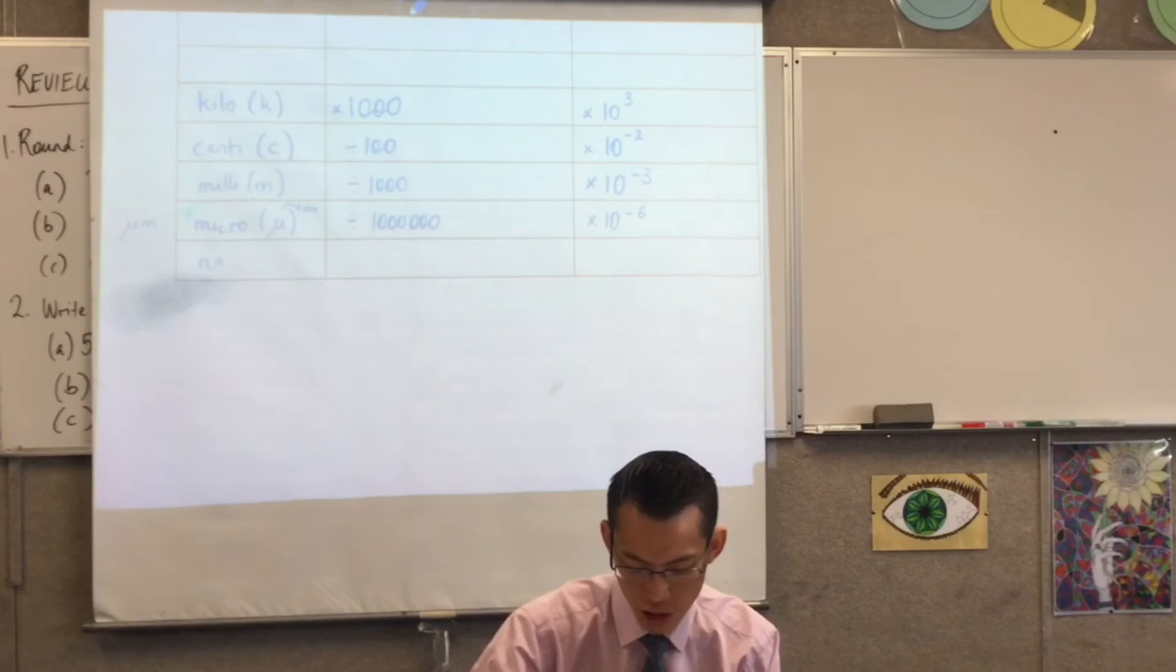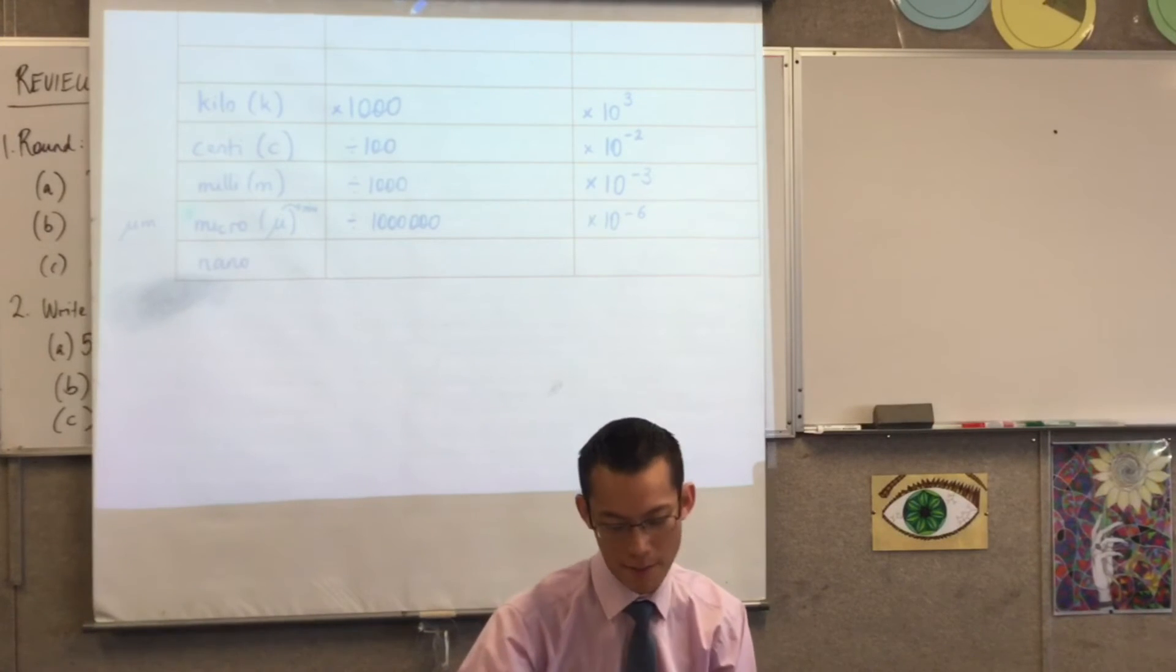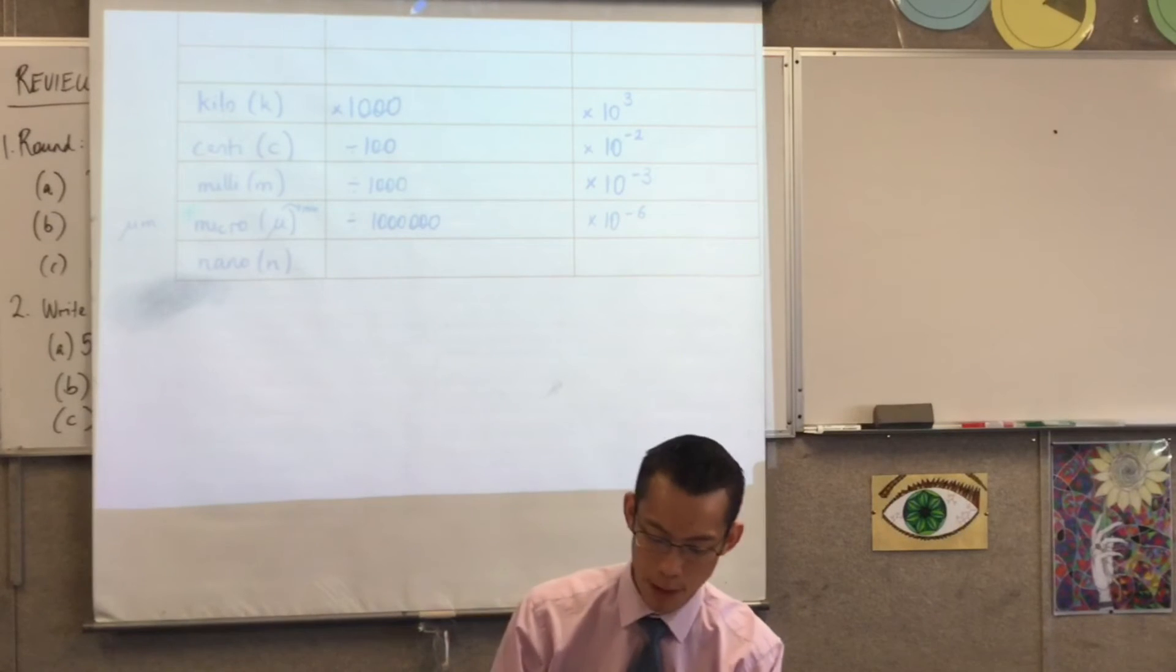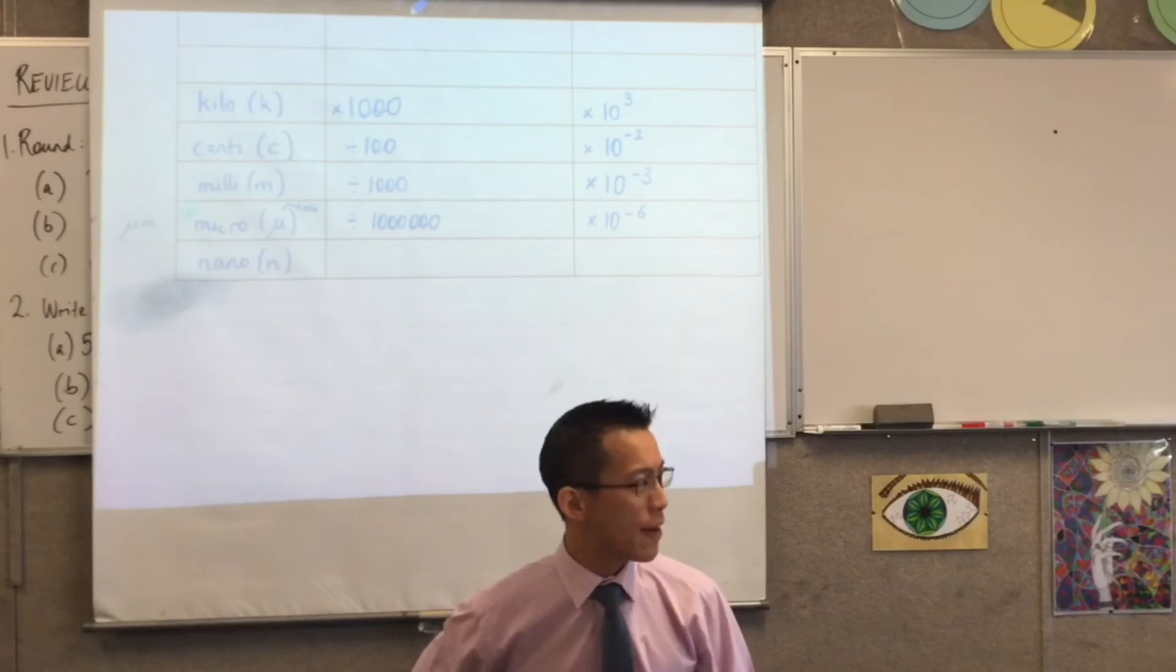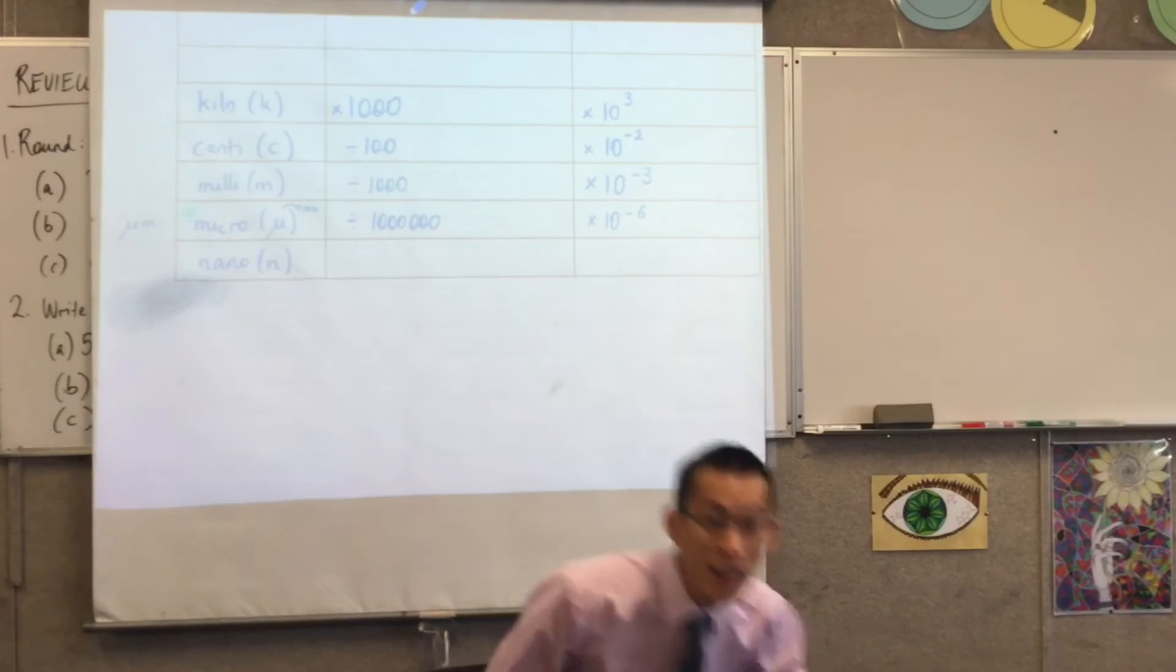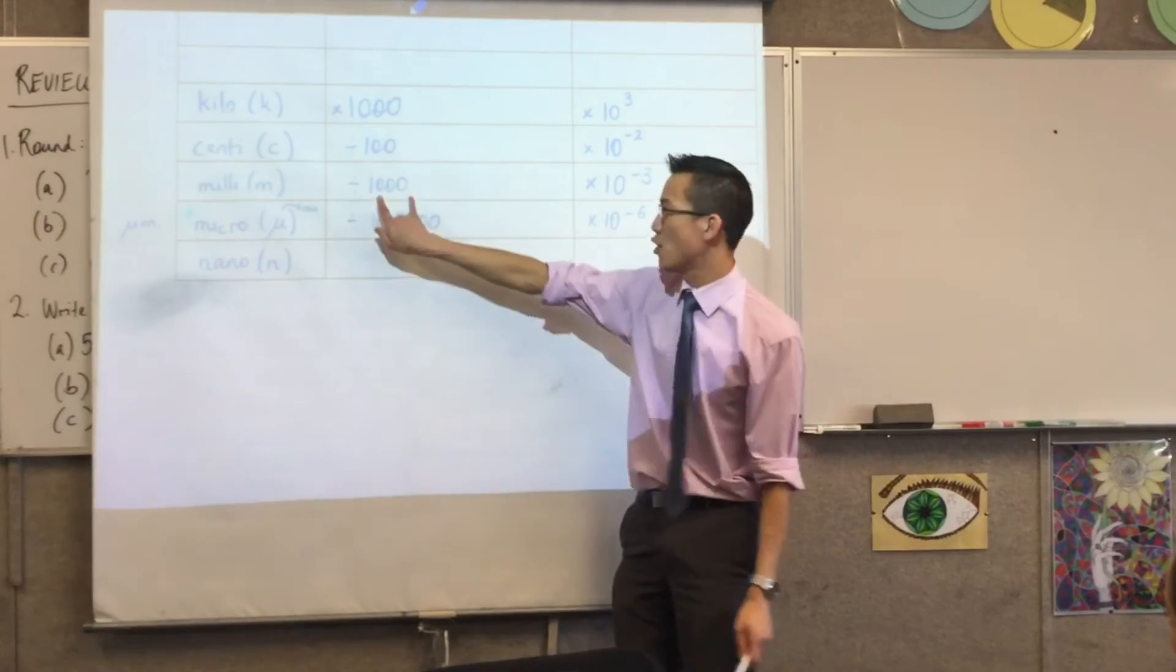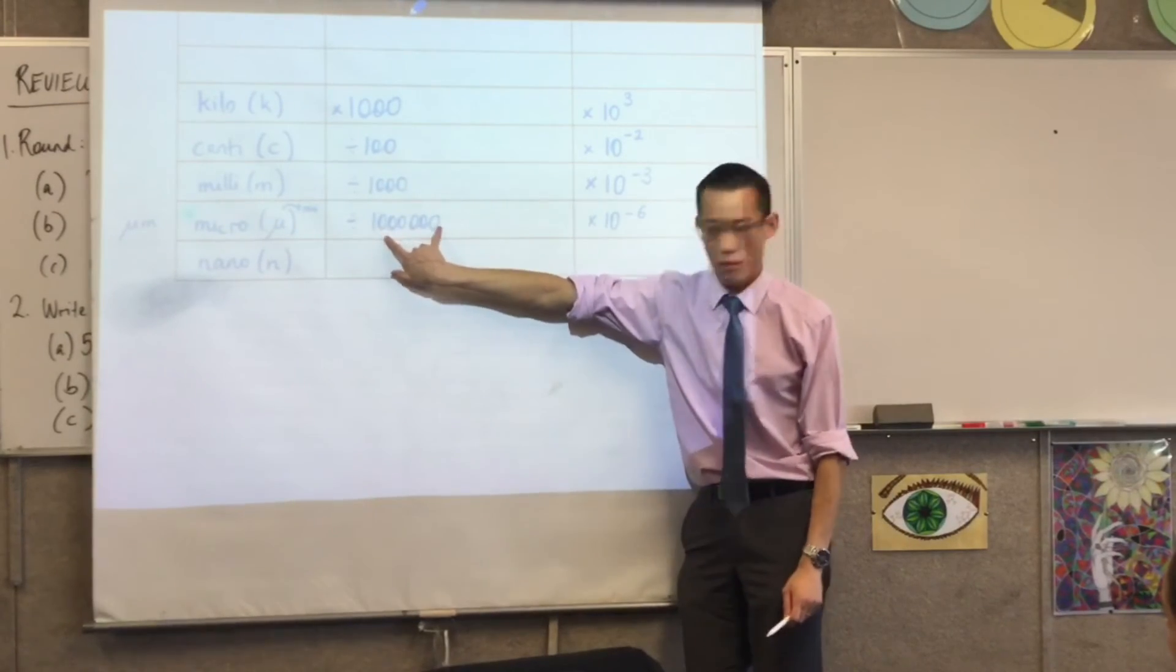One last one I alluded to before, but we didn't have any units. You use N to abbreviate nano, right? Now, you can see here, you know how we have, like, a thousand, a million, a billion, and each time, you're adding three zeros, another three zeros.